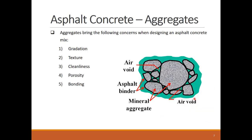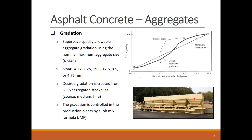There are five main considerations when selecting aggregate in an asphalt concrete mix. Let's briefly cover each of them. Well-graded aggregate is a requirement for strong asphalt concrete. Superpave specifications define the required gradation of each standard mix using its own value of nominal maximum aggregate size (NMAS) and corresponding control points. NMAS is one size larger than the first sieve that retains more than 10 percent of the aggregates.